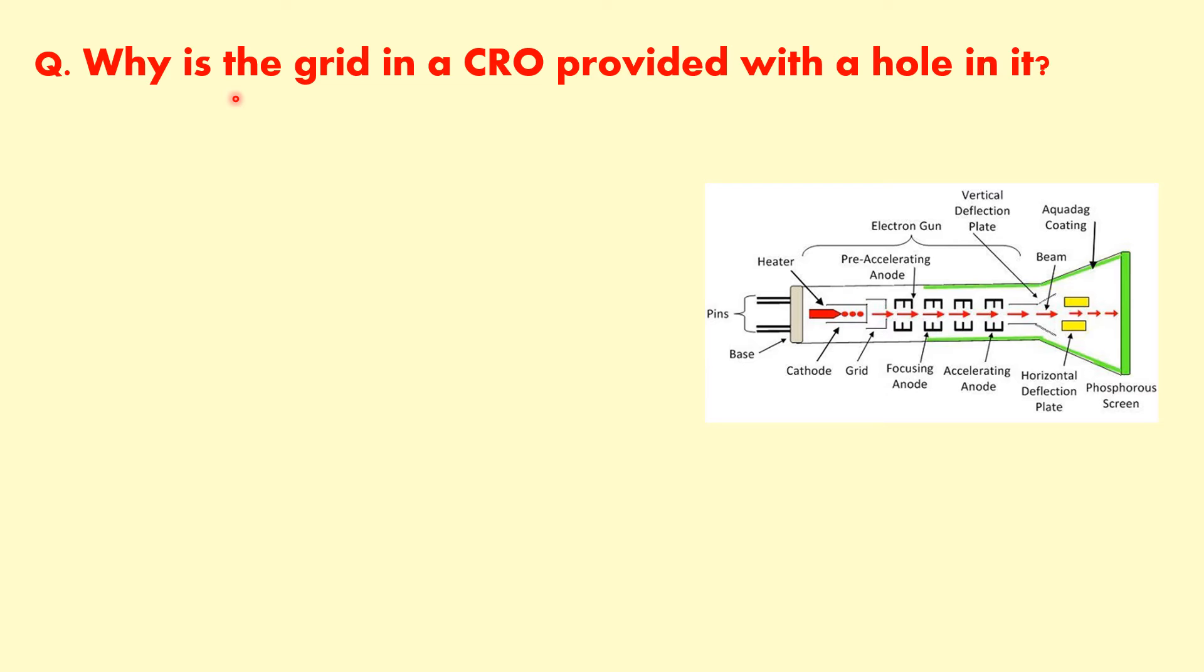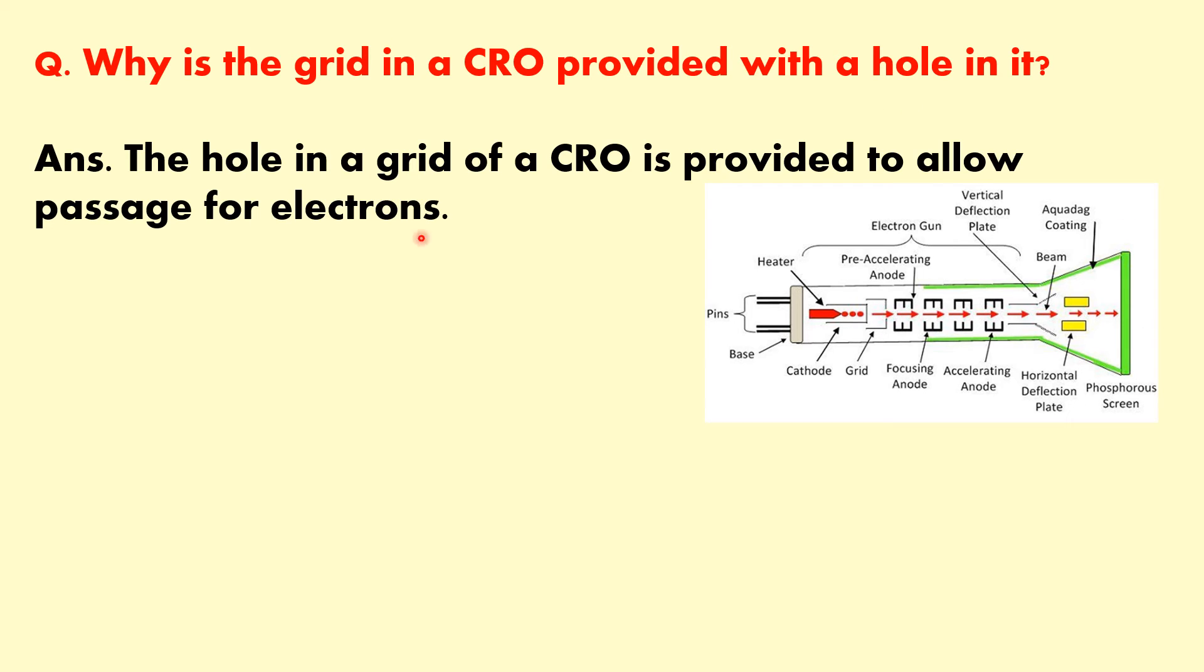Next question is why is the grid in a CRT provided with a hole in it? The hole in a grid of a CRT is provided to allow passage of electrons. So this is electrons are generated from this cathode and this is grid and there is a hole to pass these electrons.